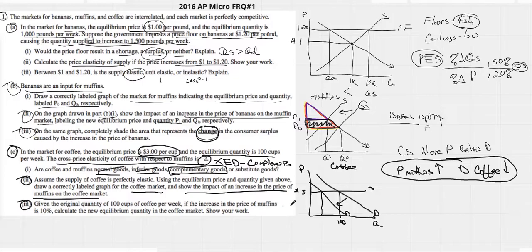Given the original quantity of 100 cups of coffee per week, if the increase in the price of muffins is 10%, calculate the new equilibrium quantity of market. This one is very confusing. The only one like this that I can remember.